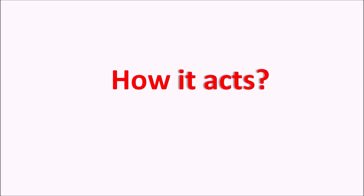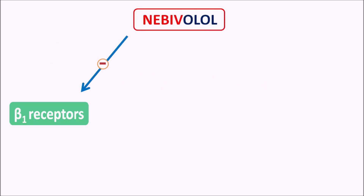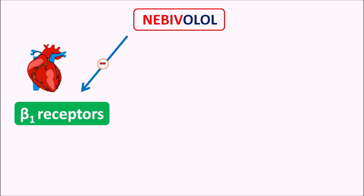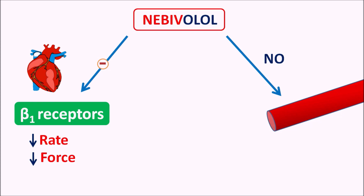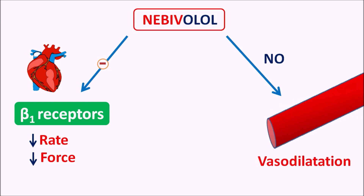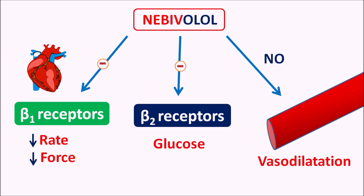Now let us see how this drug acts. Nebivolol can act on the beta 1 receptors — it can block the beta 1 receptors which are located on the heart, so that it can reduce the rate of contraction as well as force of contraction of the heart. Thereby it reduces the cardiac work and reduces the blood pressure. It also acts on the vascular smooth muscle by releasing nitric oxide, which produces vasodilation. This again reduces the cardiac work as well as blood pressure.